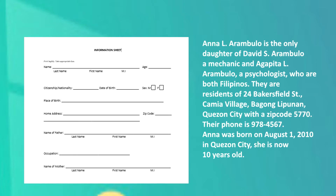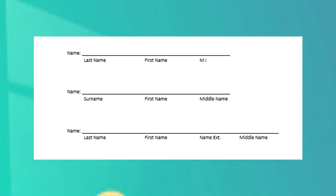As you can see, we need to start with the family name, which is Arambolo. It is followed by the first name or the given name, which is Anna. And then followed by the middle initial, which is L. But do you know that aside from this pattern, there are other patterns for the name section of the form? Take a look at this. In the first example, it starts with the last name, followed by the first name and the middle initial. The second example asks for the surname — which is also the last name — followed by the first name and then the middle name, which is the full version of the middle initial.